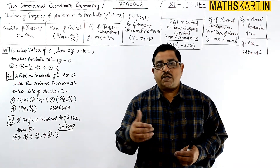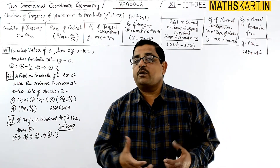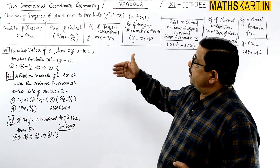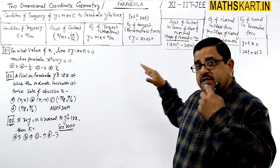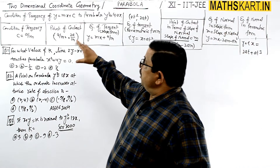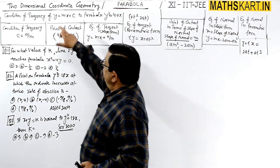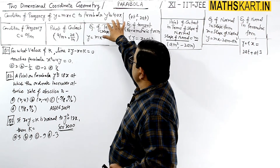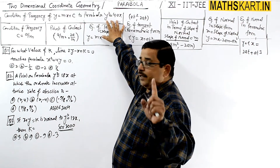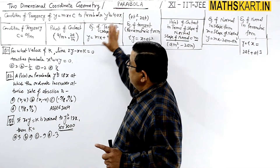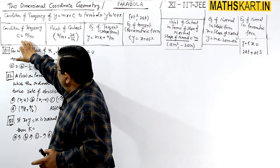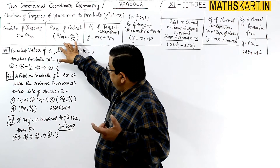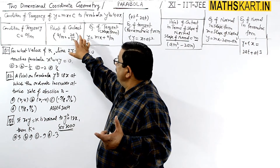Good morning friends. We have reached the condition of tangency for the parabola. We have evaluated the derivation in the previous video. For this line y equals to mx plus c and the parabola y² = 4ax, the condition of tangency is given by c equals to a by m, and the point of contact becomes (a/m², 2a/m).